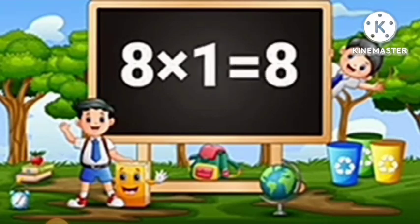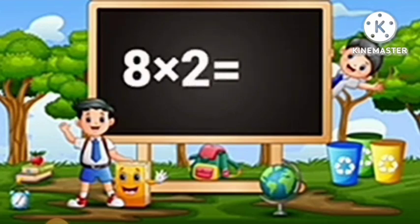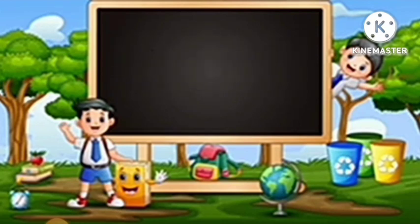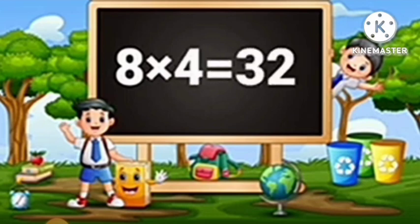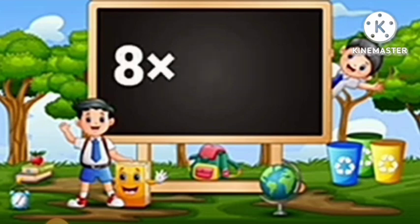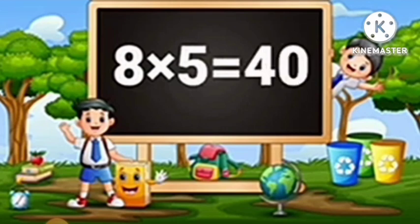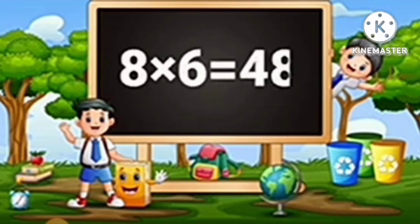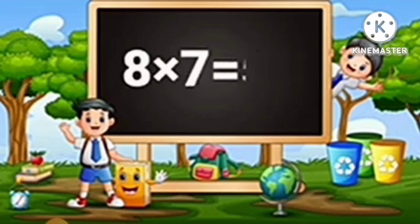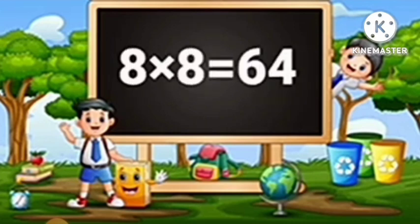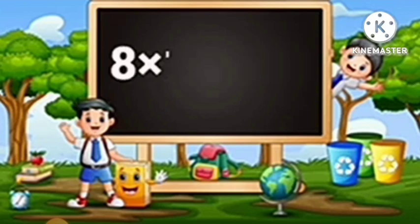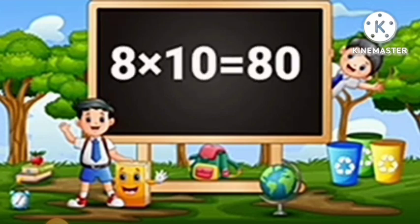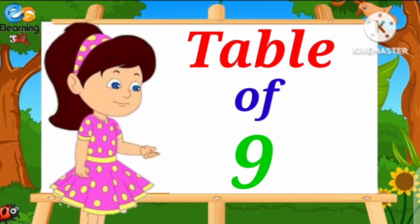Seven-Ten's are Seventy. Table of Eight. Eight-One's are Eight. Eight-Two's are Sixteen. Eight-Three's are Twenty-Four. Eight-Four's are Thirty-Two. Eight-Five's are Forty. Eight-Six's are Forty-Eight. Eight-Seven's are Fifty-Six. Eight-Eight's are Sixty-Four. Eight-Nine's are Seventy-Two. Eight-Ten's are Eighty.